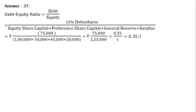That equals rupees 75,000 upon rupees 2,25,000, which gives 0.35 is to 1.